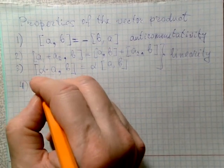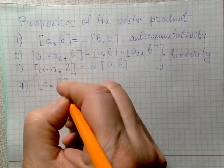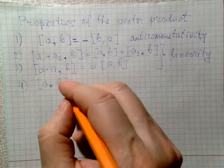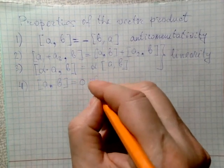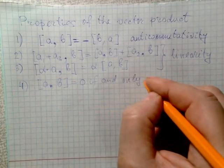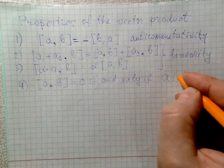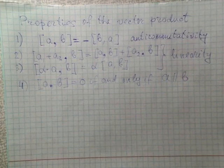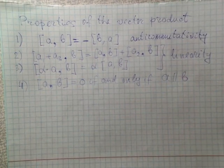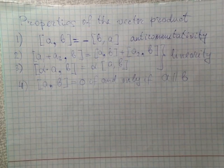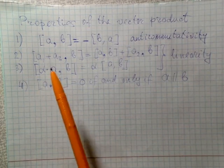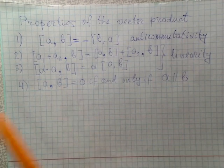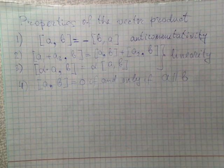The fourth property states that [a, b] equals zero if and only if a is parallel to b. So the product of parallel vectors is zero, and if the product is zero then the vectors are parallel. Testing whether the vector product is zero is a test for the parallelism of two vectors.